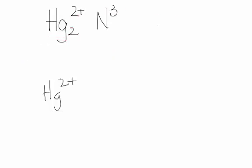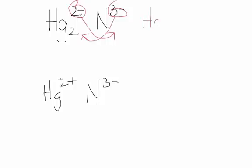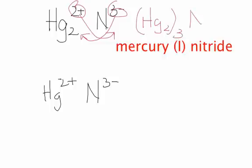So if this mercury interacts with, let's say, nitride N^3-, you would take this number, put it down here, and you take this number, put it down here. So in this case, you would have to write (Hg2)3N2 for mercury(I) nitride.